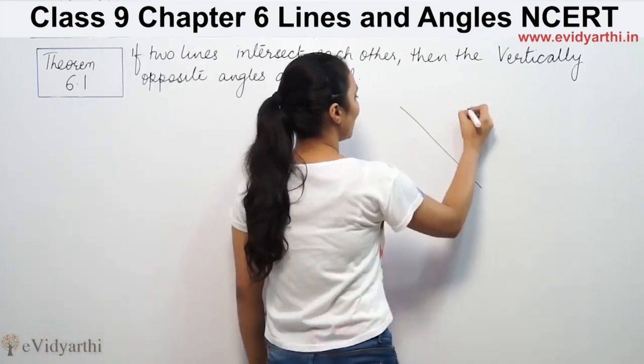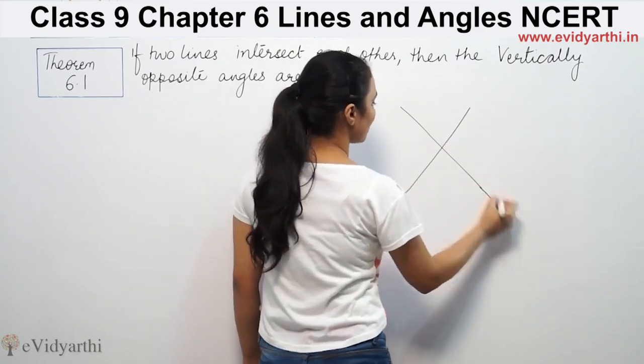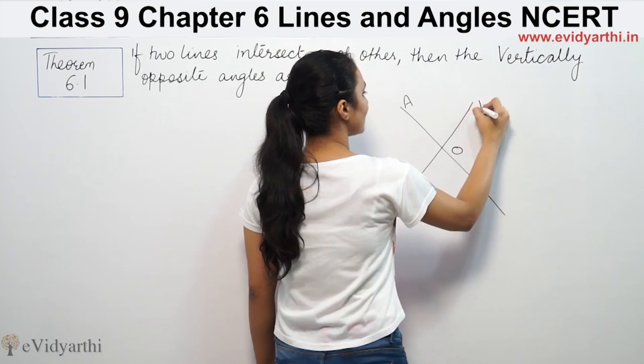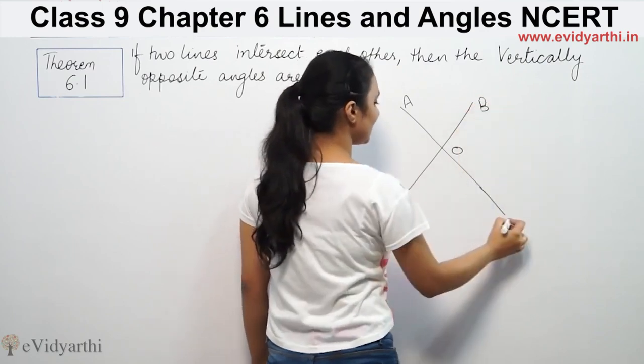We have two lines here. One is this. This is A. This is O. This is B. C. D.